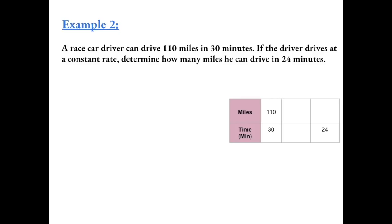Example 2. A race car driver can drive 110 miles in 30 minutes. If the driver drives at a constant rate, determine how many miles he can drive in 24 minutes. We can't go directly from 30 minutes to 24 minutes, so we can first stop at a number that goes into both 30 and 24, such as 6 minutes. Going from 30 to 6 means dividing by 5, and to keep the ratios equivalent, we also divide the miles by 5. 110 divided by 5 gives us 22, so in 6 minutes he drove 22 miles.